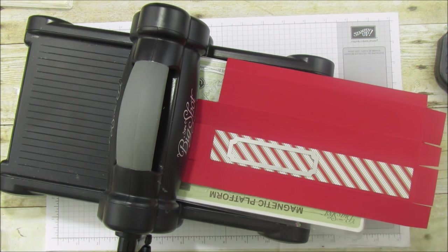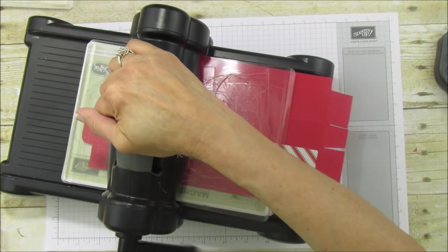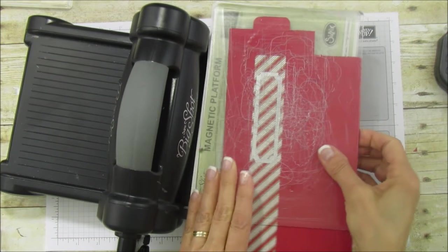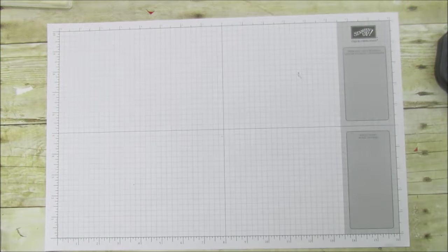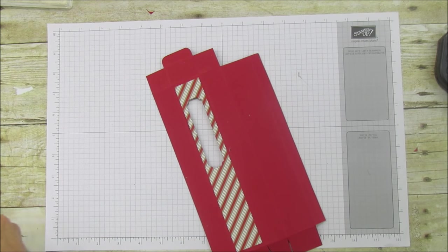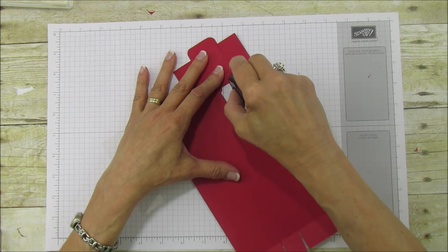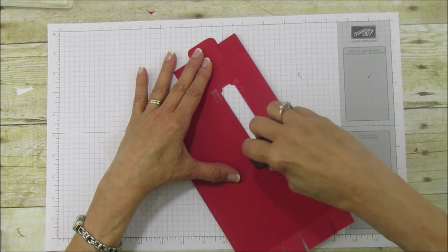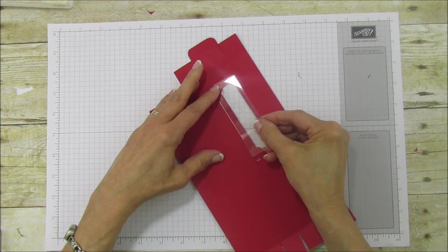I have my magnetic platform down and one of my regular plates and I'm going to put it down a little bit and then we're going to run this through. Let's grab our little window sheet and I'm going to put some more fast fuse and I'm just going to go along the sides and we'll just set it on top.